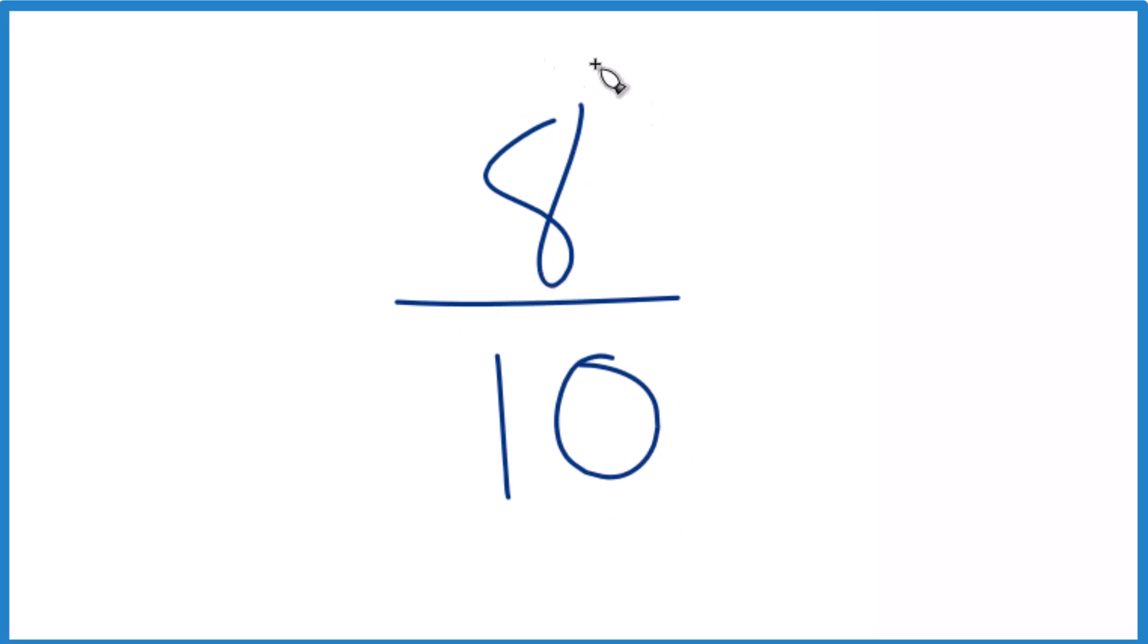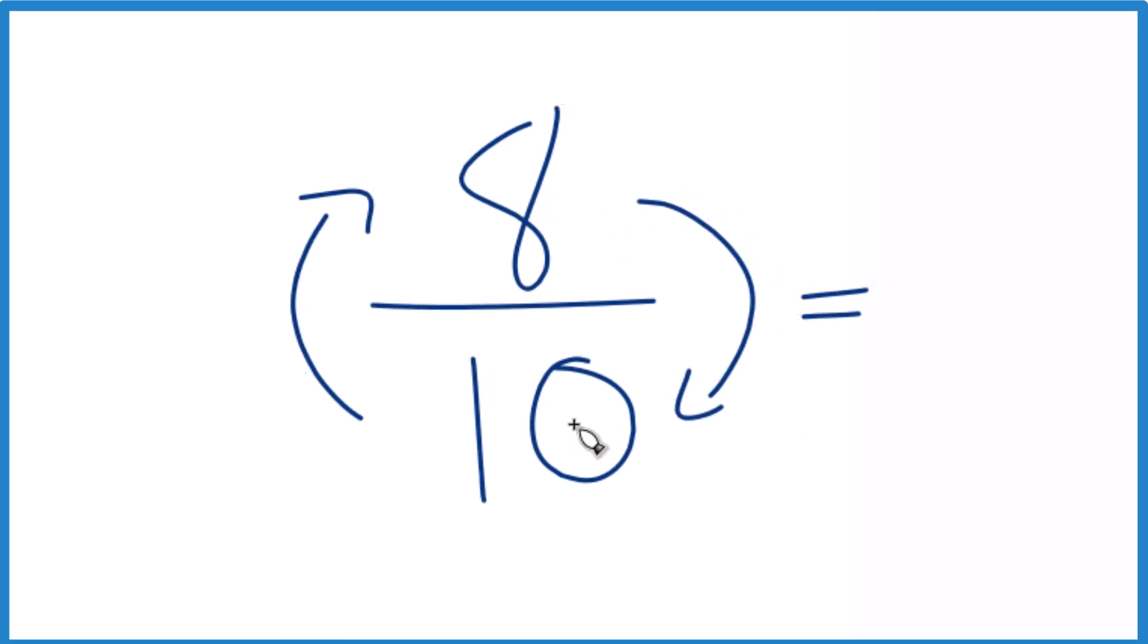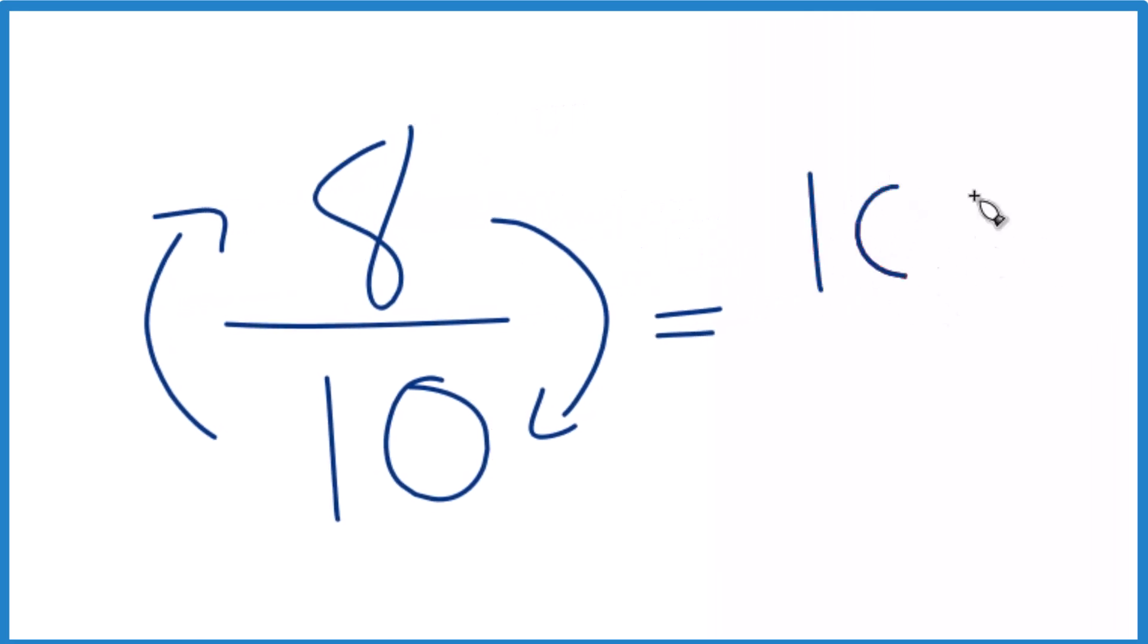When we find the reciprocal for a number like 8 tenths, we move the denominator to the top and the numerator to the bottom. So now we end up with 10 on top, and then 8 goes on the bottom.